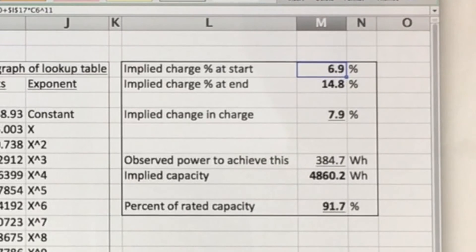So 6.9% is the implied charge of 3.472 volts. 14.8% implied charge of 3.558 volts. So the total amount we've charged it is that minus that, 7.9%.